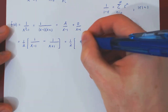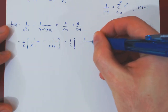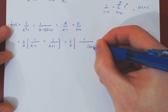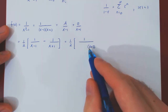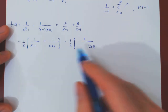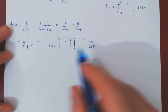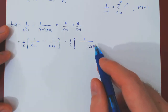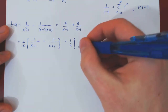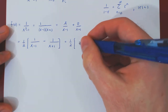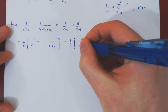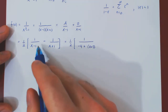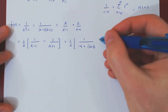For the first fraction, we write x plus 3 in the denominator. We need to ask: what added to 3 gives us negative 1? The answer is negative 4. So this takes care of the first function.